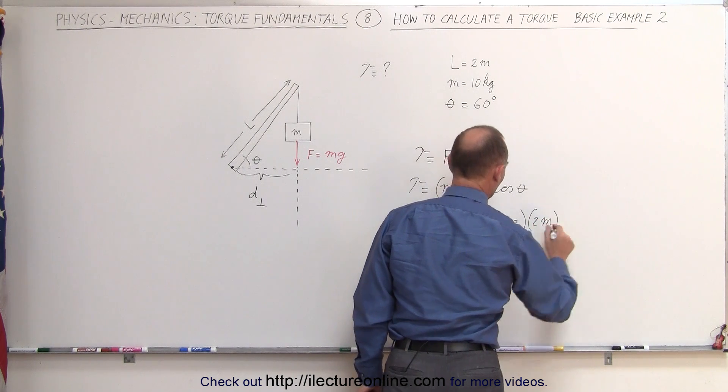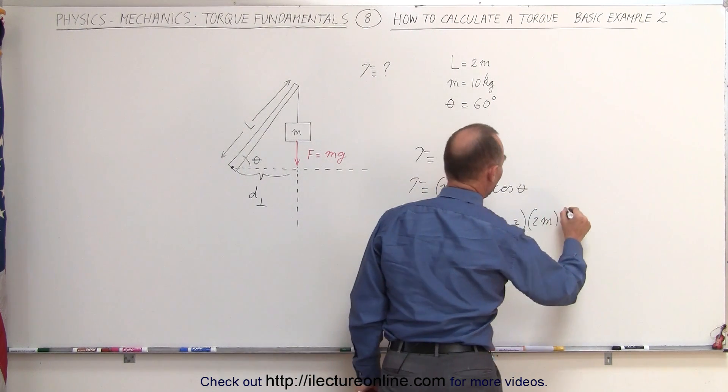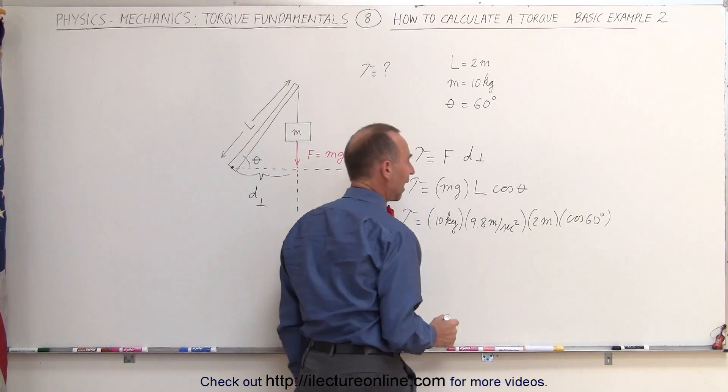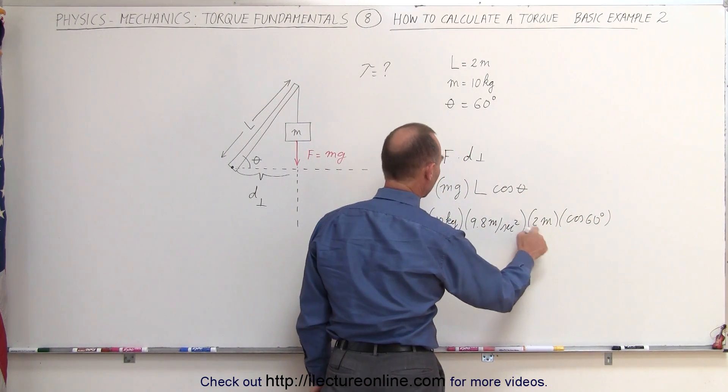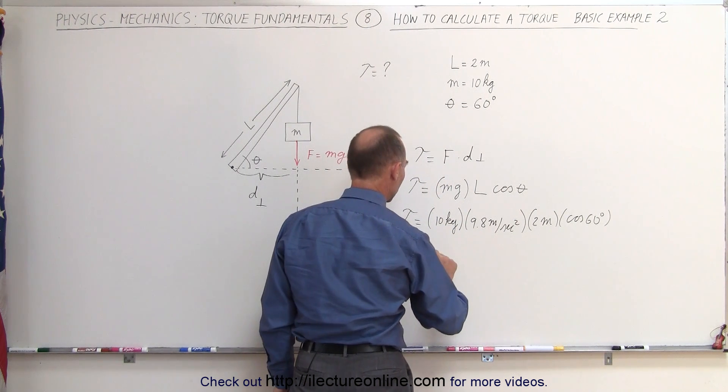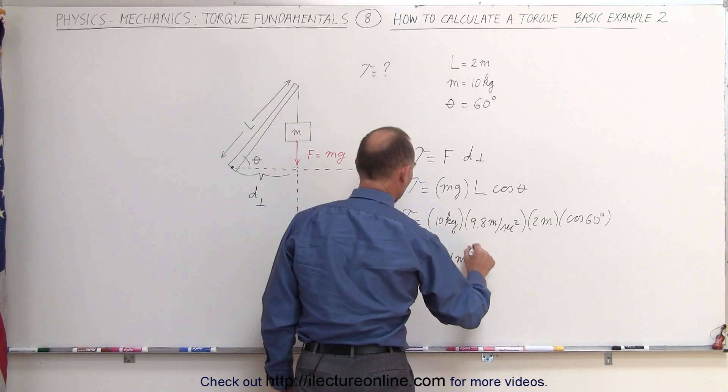L is 2 meters, that's where we get newton times meters, and then we have the cosine of 60 degrees, which is one-half. One-half times 2 is 1, 10 times 9.8 is 98, that means the torque is equal to 98 newton meters.